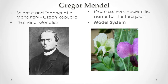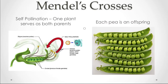Mendel used the pea plant to study how traits or characteristics are inherited — he was very interested in how they are passed from parents to offspring. These are a model system, meaning the concepts can be applied to other organisms as well, not just the pea plant. The scientific name for this pea plant is Pisum sativum, where the genus is capitalized and the specific epithet is lowercase and italicized.